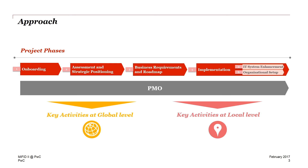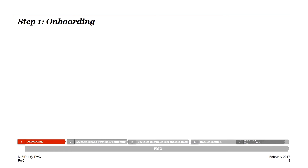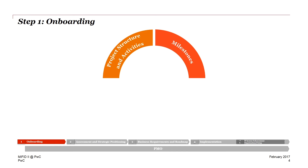Let's go into details of step one: onboarding. In the onboarding phase you need to decide on how to structure the overall project. This means finalizing a project structure — especially all high-level project activities need to be identified. Afterwards, there needs to be a definition of all project milestones, keeping in mind which milestones and what timetable the project will need to reach in order to be compliant with the entire regulation by the 3rd of January 2018.